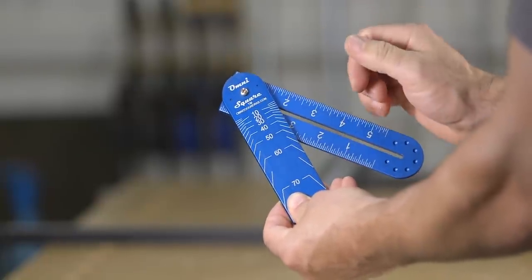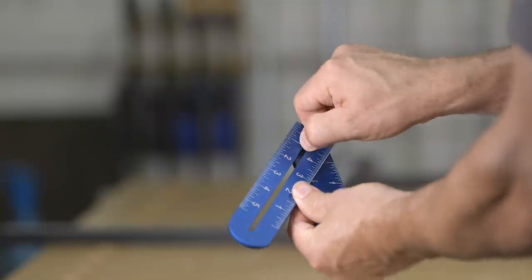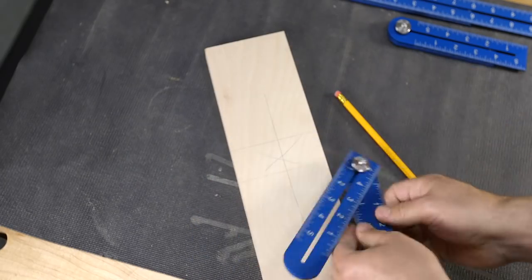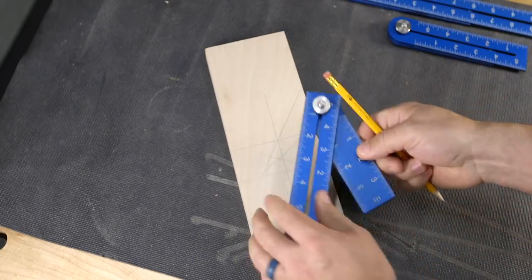Once you find your exact angle, you can lock the blade in place by simply tightening the knob clockwise, and then you can transfer that angle to another piece of work. This tool can also be used as a T-square, a compass, and a depth gauge.